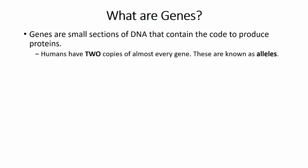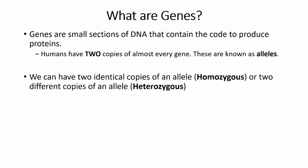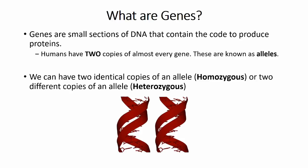We humans have two copies of almost every gene that we use. Sometimes we use both copies of the gene for a particular protein; other times we rely on one single copy. The single copies that we possess are called alleles, and we can either have two identical copies of a particular gene, which is known as homozygous, or two different copies, known as heterozygous.